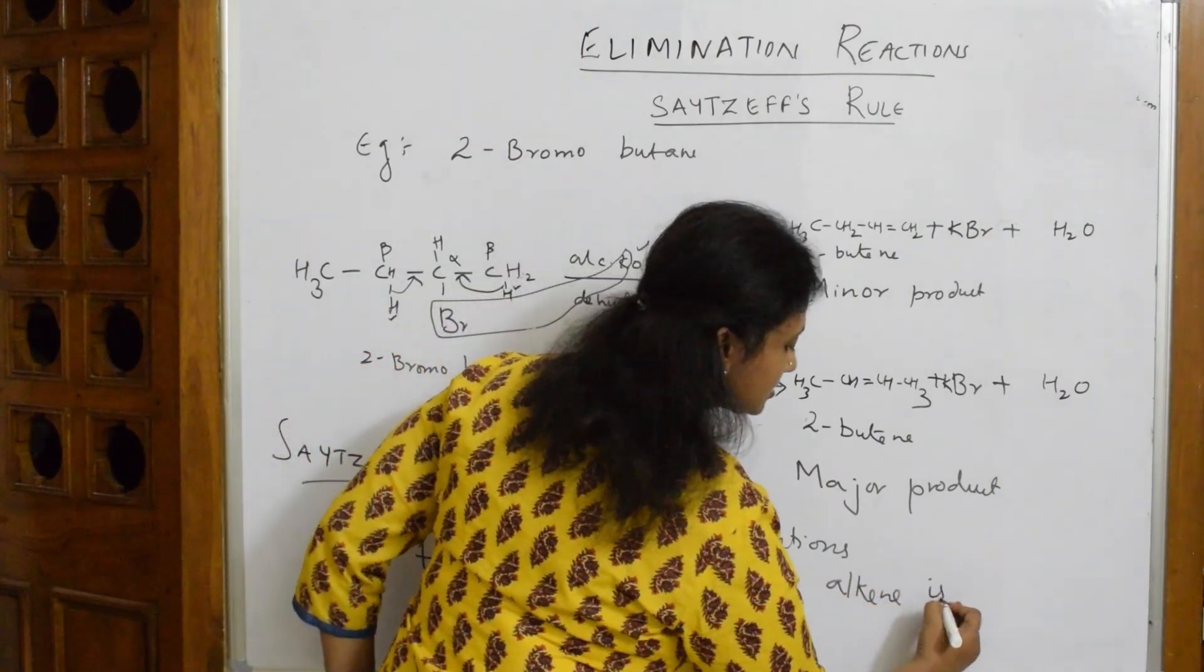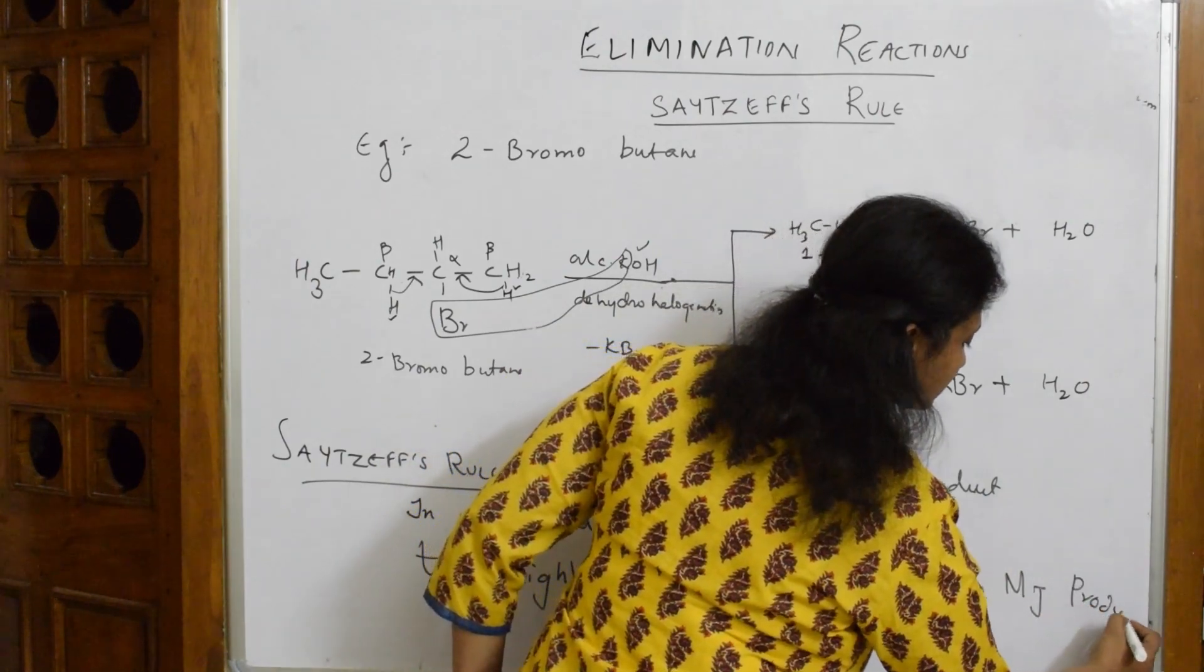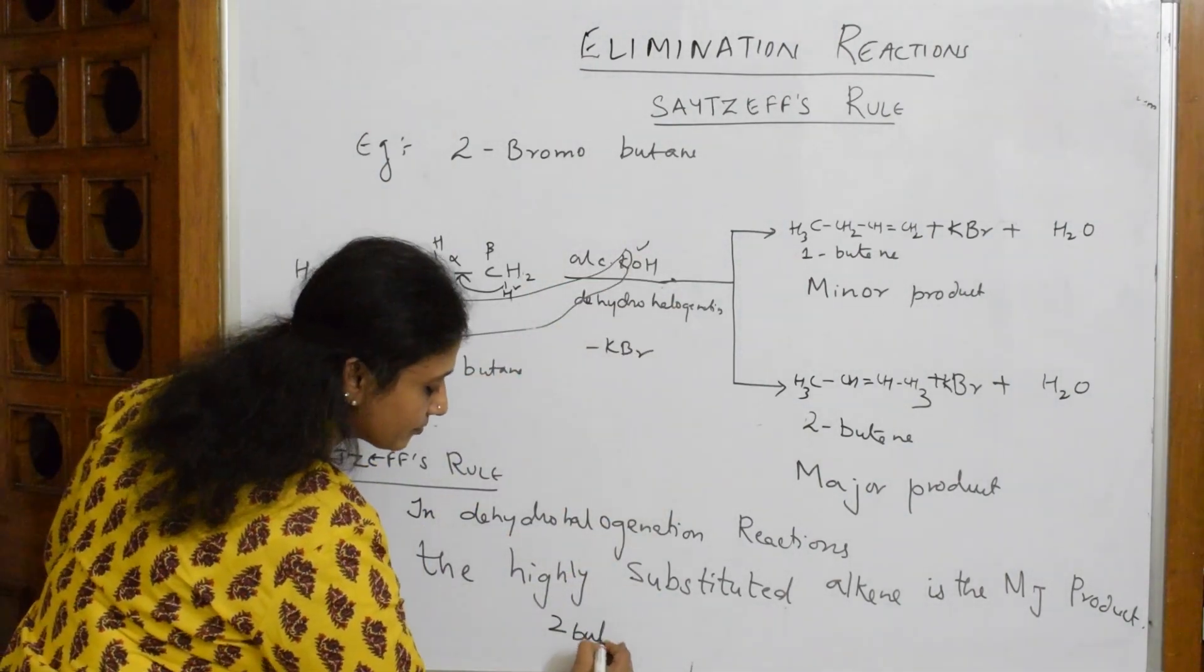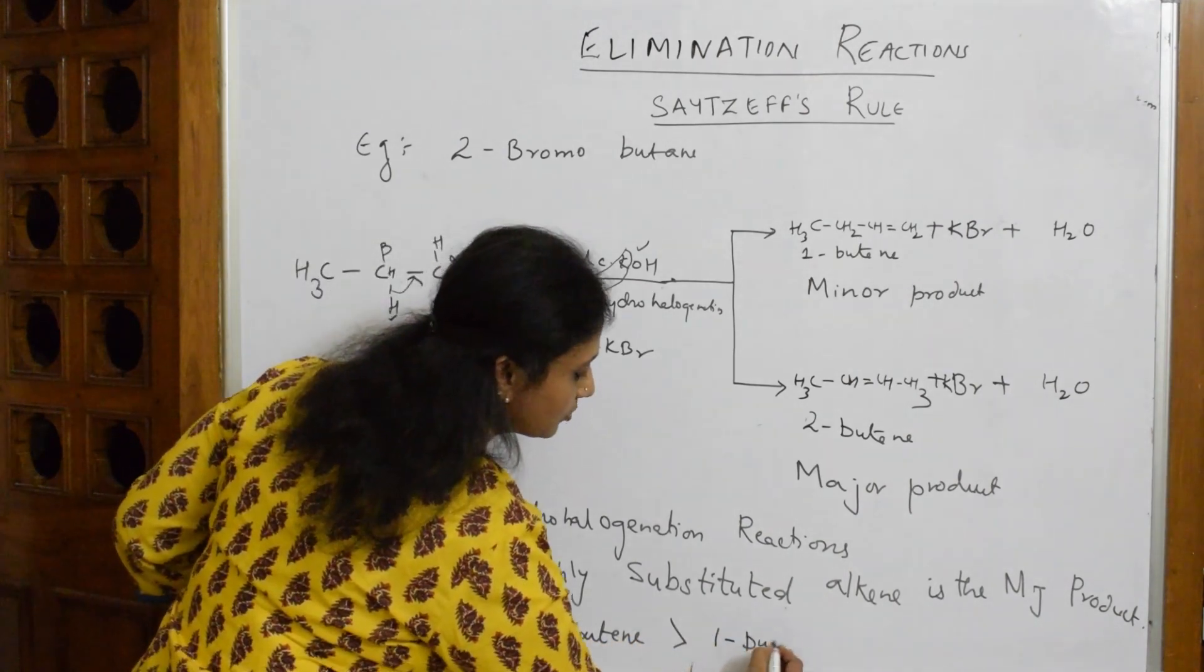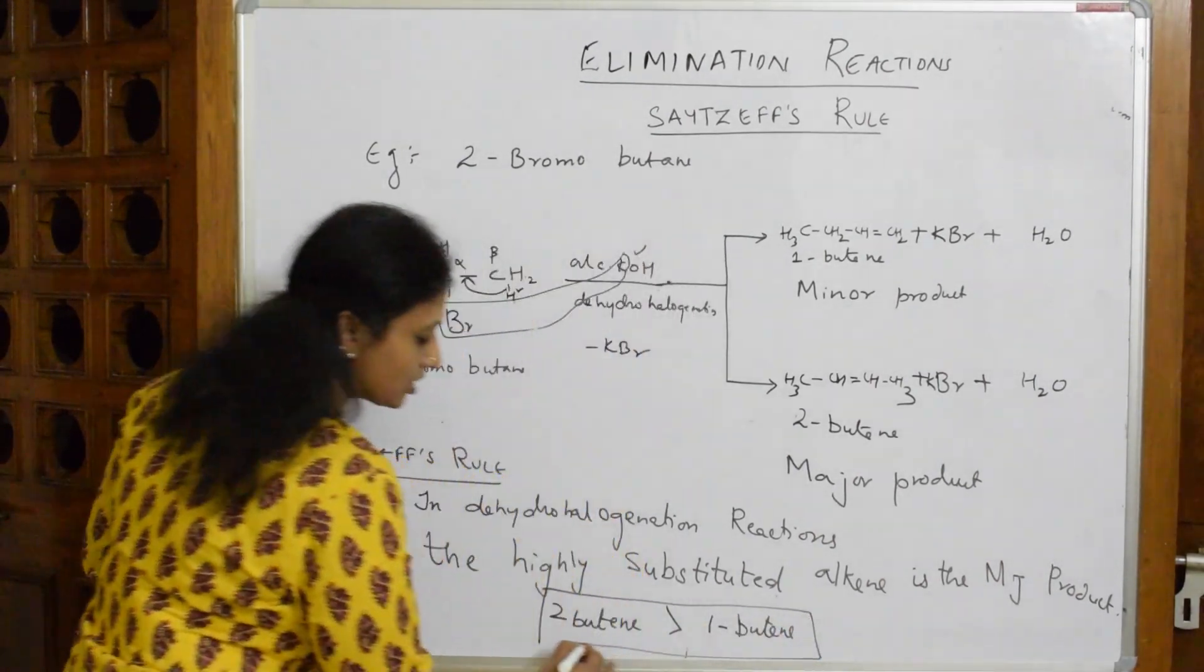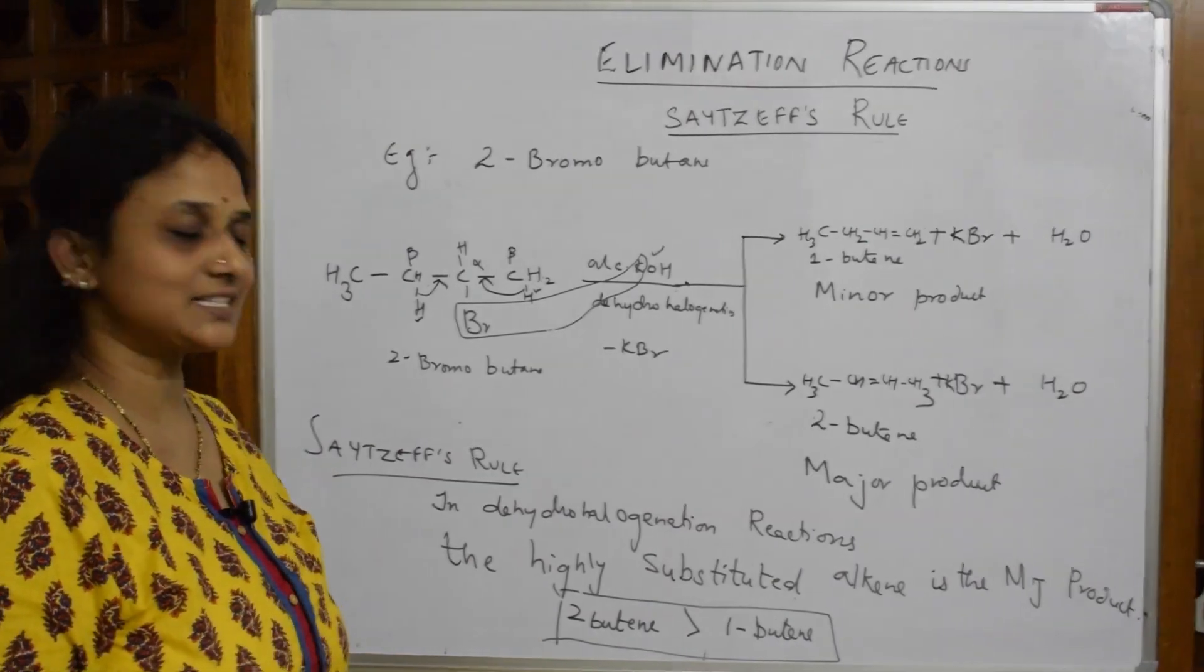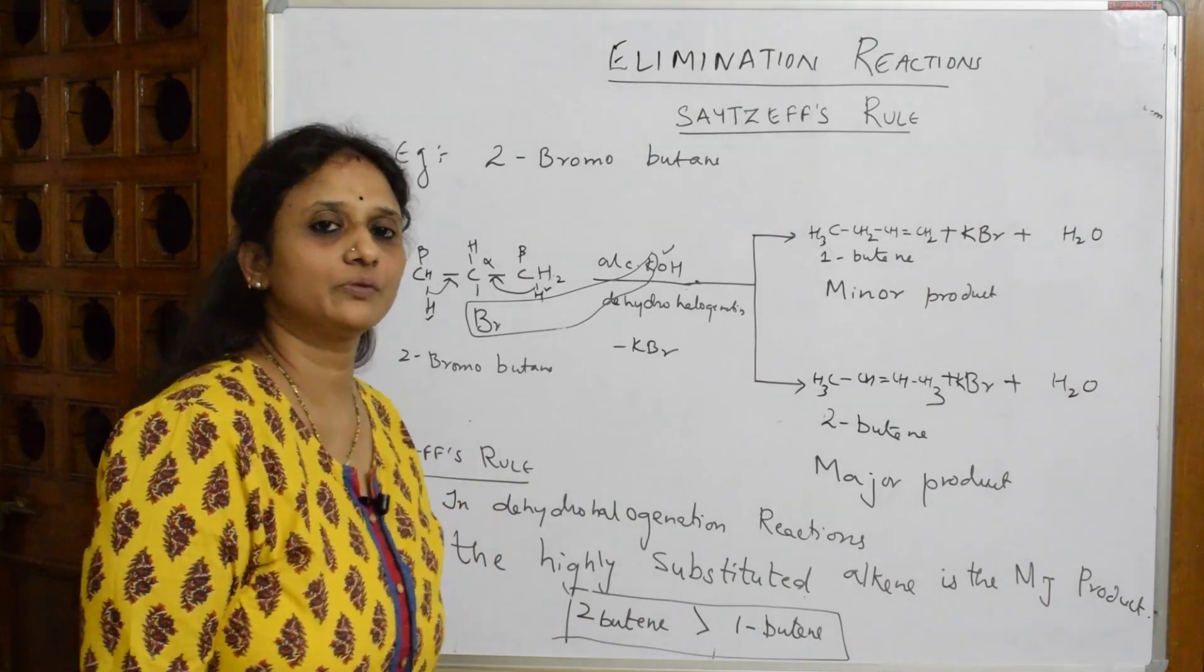This is Saytzeff's Rule. When I compare these two, which is the major product? 2-butene is the major product, it is more preferred than 1-butene. This is the conclusion. E2 elimination reactions expect you to understand: always the highly substituted alkene is the major product. Note this example - very important - Saytzeff's Rule, apart from Markovnikov's and anti-Markovnikov's. Thank you for watching.